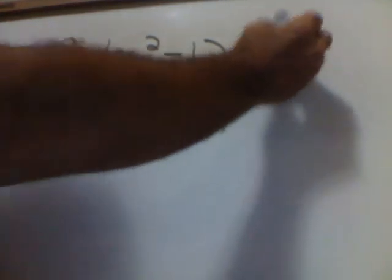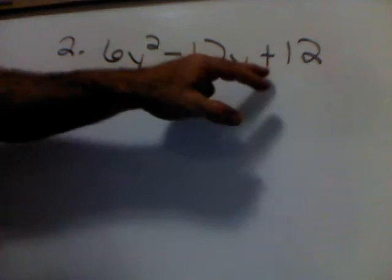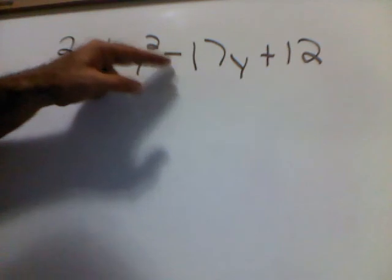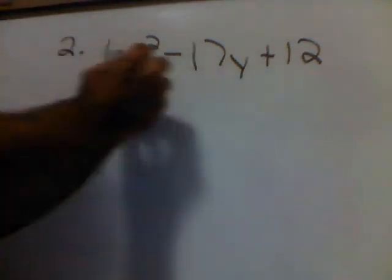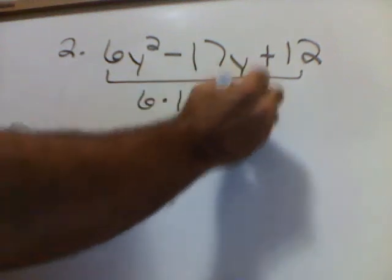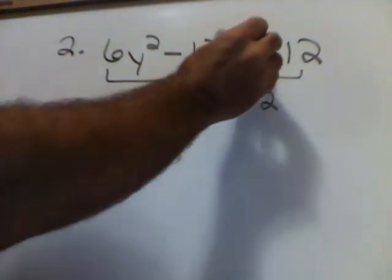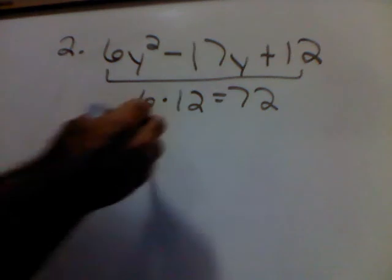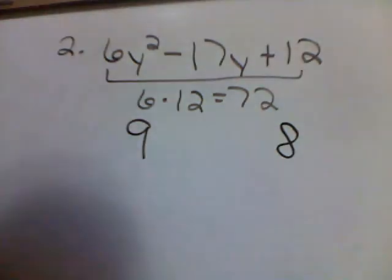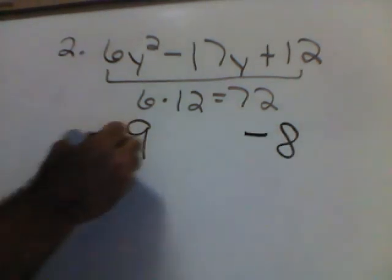All right, number 2: 6y squared minus 17y plus 12. Now, I'm going to do the same thing, except this time the last sign is positive, so both my factors, when I write them, I'm going to make negative like the middle number. Okay. 6 times 12 is 72. I now need factors of 72 that add and give me 17. That's going to be 9 and 8. Now, since the middle was negative, we made both of these numbers negative.